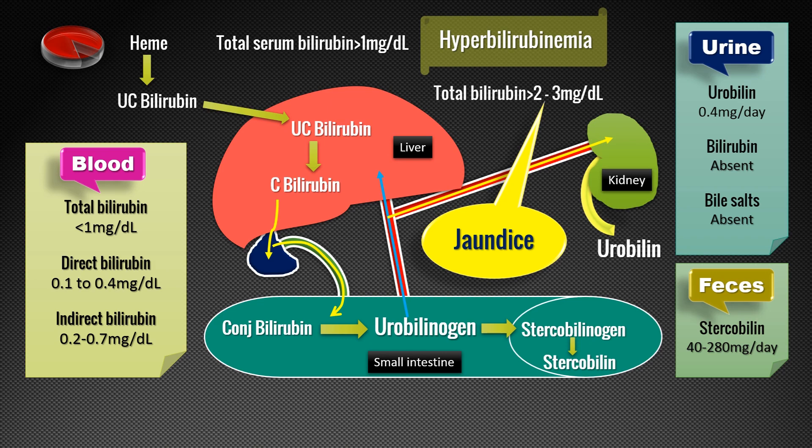A patient with hyperbilirubinemia need not necessarily present with jaundice, because the yellowish discoloration only takes place when hyperbilirubinemia exceeds more than 2.5 mg/dL. At that level, the colored pigment diffuses into soft tissue and we can see yellowish discoloration of the skin, mucous membrane, tongue, and sclera.